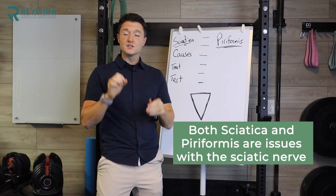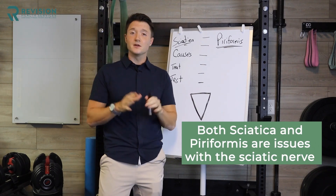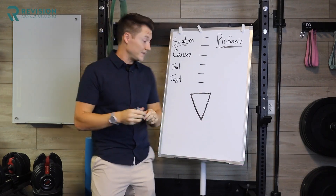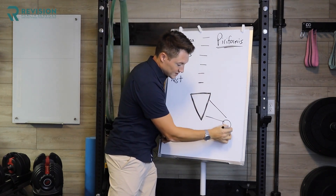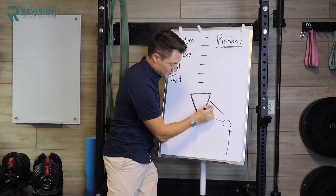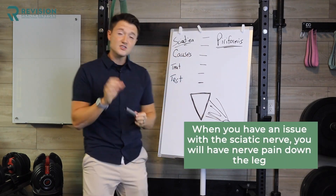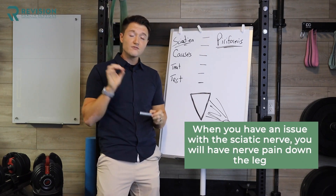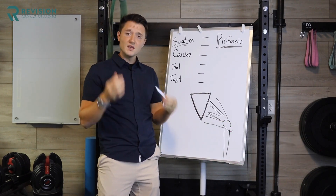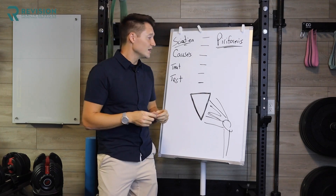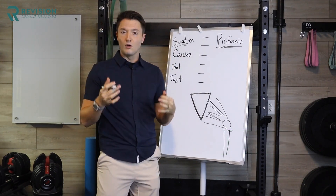To start, let's be clear — they're both an issue with the sciatic nerve. That sciatic nerve starts in your lower back, goes through your glute, and goes down your leg. When you have an issue with the sciatic nerve, you will have nerve pain down the leg — whether that be sharp, burning discomfort, or even weakness into the leg. Those are typical nerve symptoms, so both of these conditions have nerve involvement.